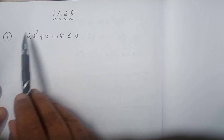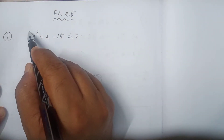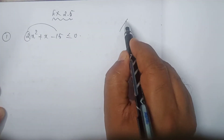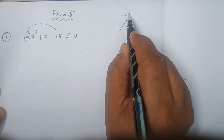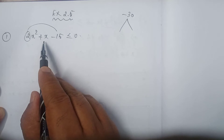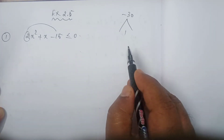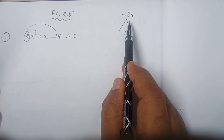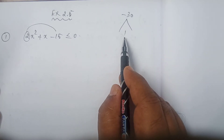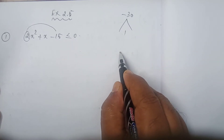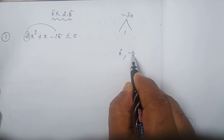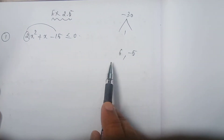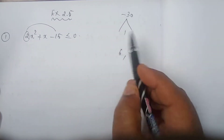This quadratic expression needs to be factorized. 2 into minus 15 is minus 30, and the coefficient of x is 1. So the two numbers: product of the two numbers equals minus 30 and sum of the same two numbers equals 1. The two numbers are 6 and minus 5, since 6 plus minus 5 equals 1 and 6 into minus 5 equals minus 30.